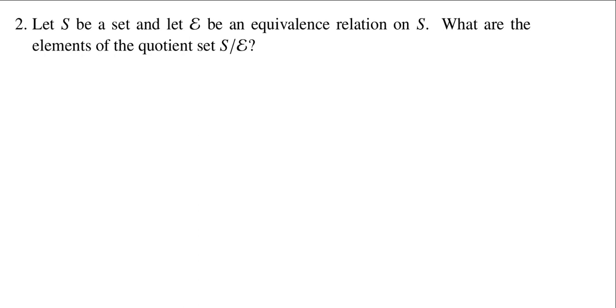So the quotient set is actually quite simple to at least write down. Maybe understanding it isn't obvious, but at least it's very simple to write the definition. S mod E in words equals the set of all E equivalence classes of S. In symbols, we would say this consists of all equivalence classes of elements. So the form looks like an equivalence class of an element, and the condition here is this X needs to be some element of S.